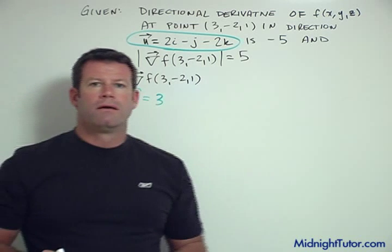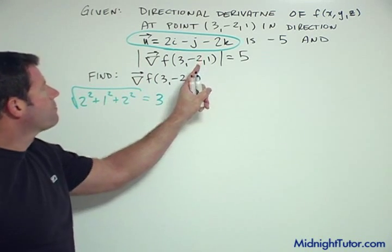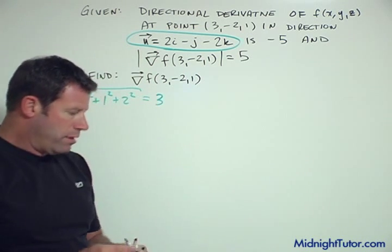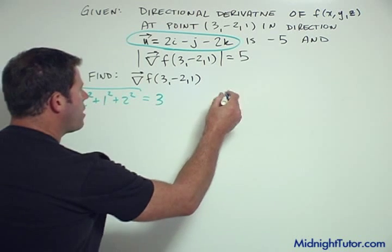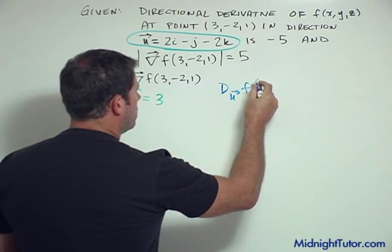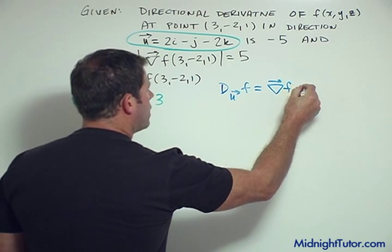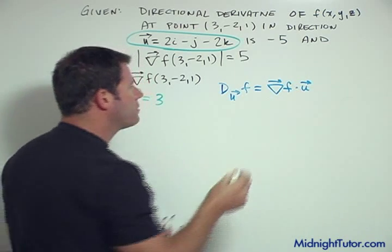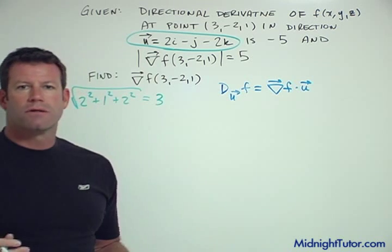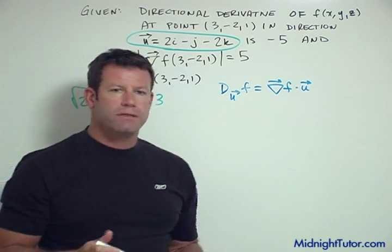Now what is the directional derivative? The directional derivative in the direction of u of f is the gradient of f dotted with u. It's a dot product, so the directional derivative is a scalar quantity, it's a value indicating some kind of a slope essentially related to this equation.